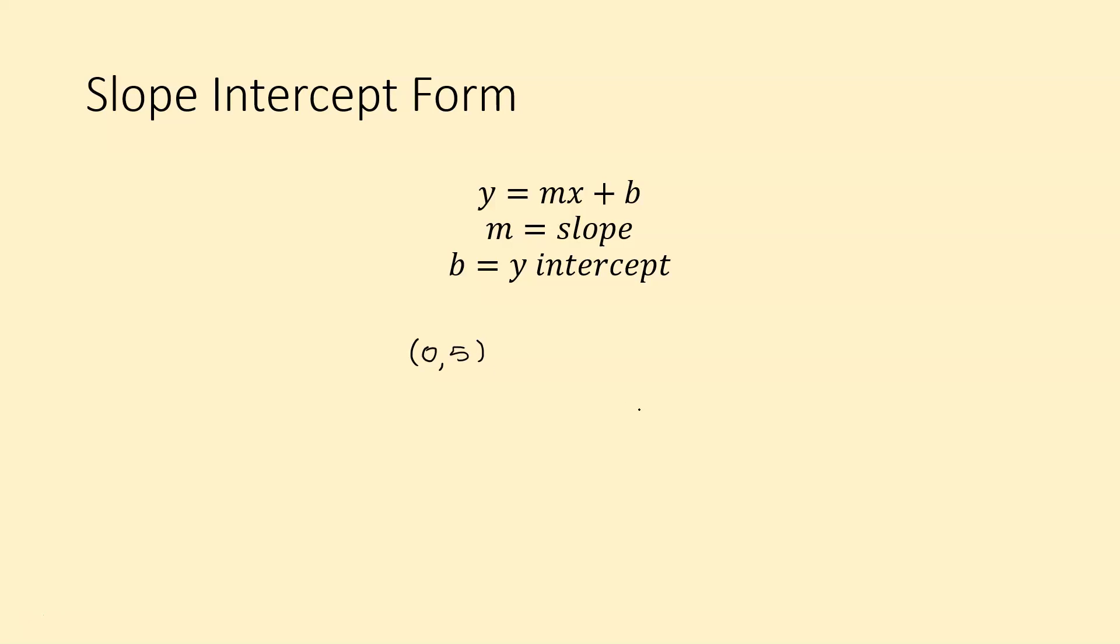So at 0 comma 5, it means that b equals 5, right? So it's whatever the y value is, where it crosses through the y-axis.